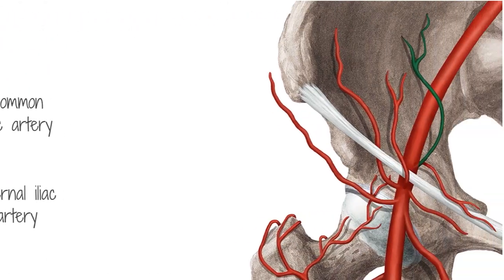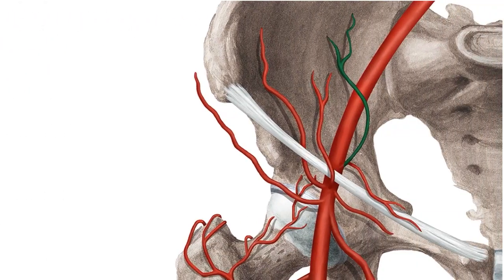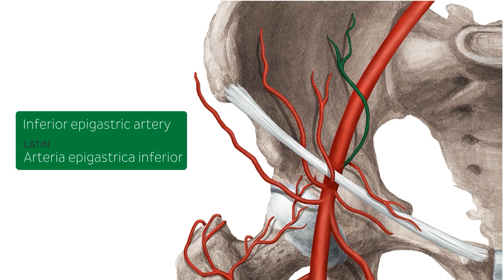The vessel highlighted in this image just before the external iliac artery passes under the inguinal ligament to become the femoral artery is the inferior epigastric artery. This vessel always arises just before the external iliac artery reaches the inguinal ligament. It passes up via the transversalis fascia and then pierces the rectus abdominis muscle.